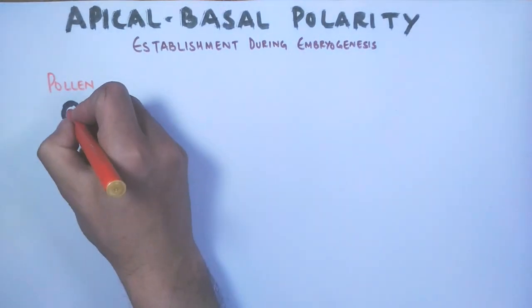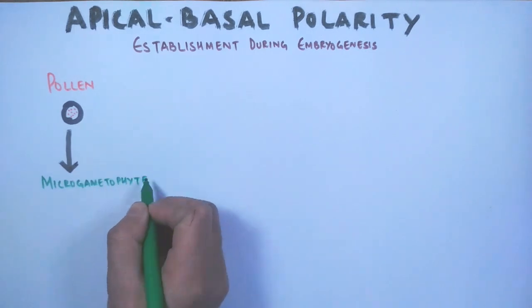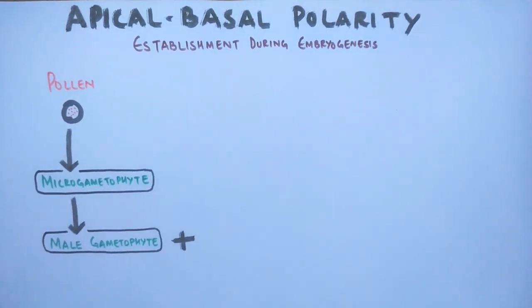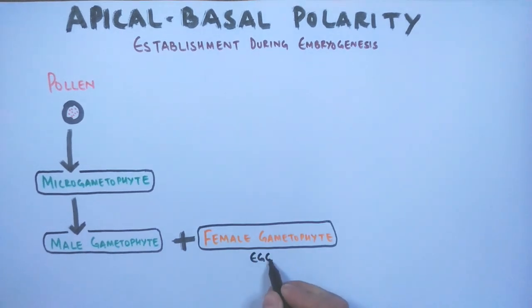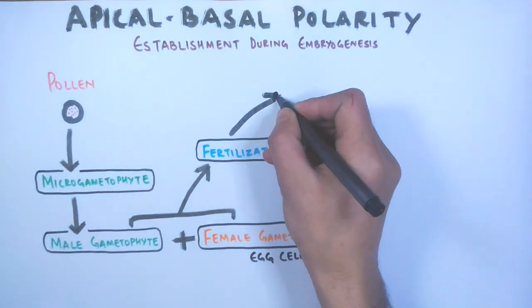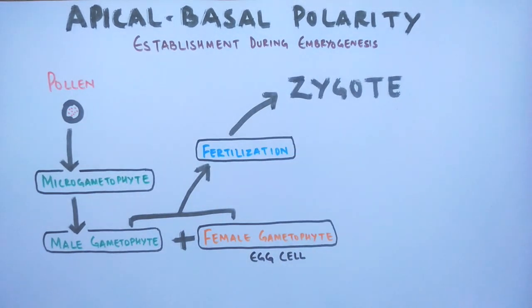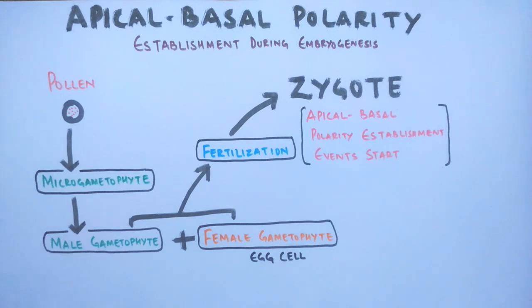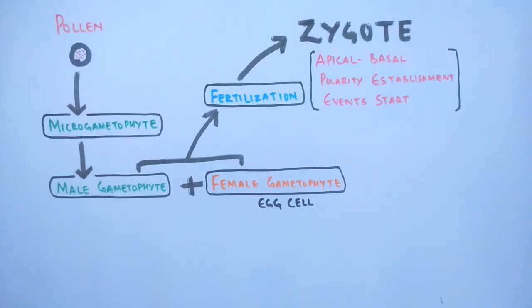First, there is a pollen which is the microgametophyte. This gives off the male gametophyte which combines or fuses with the female gametophyte, the egg cell in the plant, and that takes us to the fertilization event and forms the zygote. From here several genes are expressed within the zygote which induce the apical-basal polarity in the dividing cells.